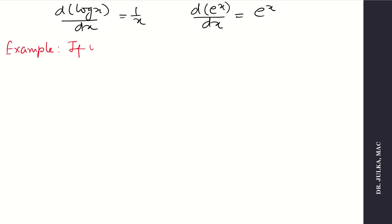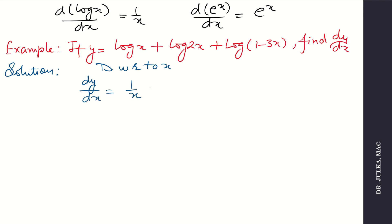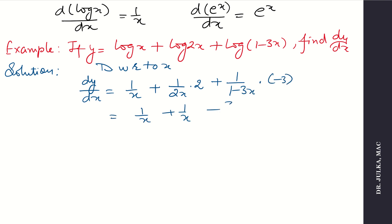Example: if y equals log x plus log 2x plus log(1 minus 3x), find dy by dx. We first differentiate the function then the angle. Derivative of log x is 1 by x. Derivative of log 2x is 1 upon 2x multiplied by derivative of 2x which is 2. Derivative of log(1 minus 3x) is 1 upon (1 minus 3x) into minus 3, because minus 3 is the derivative of 1 minus 3x. After calculation, the answer is 2 by x minus 3 upon (1 minus 3x).